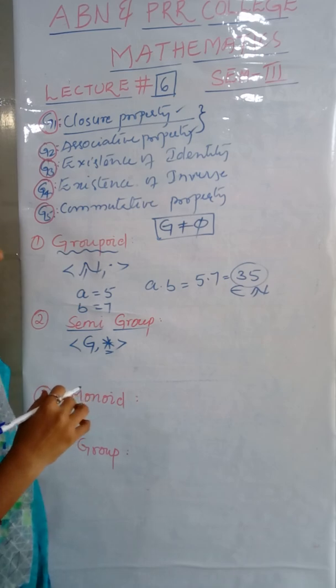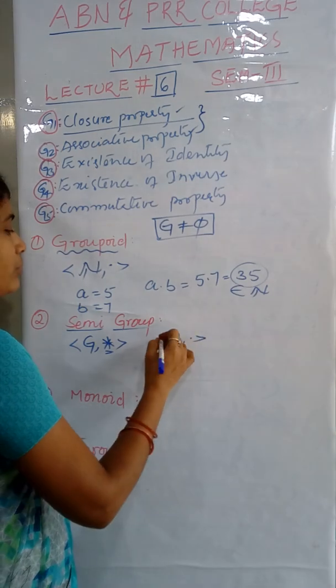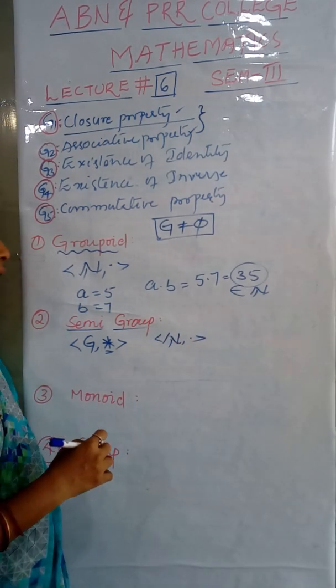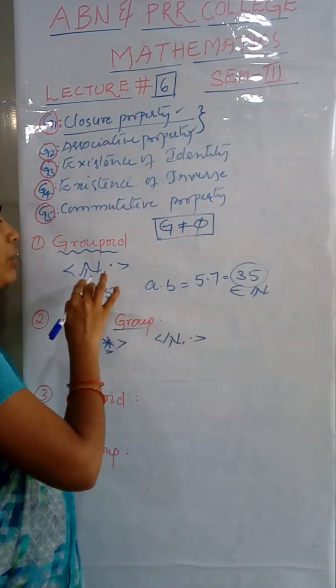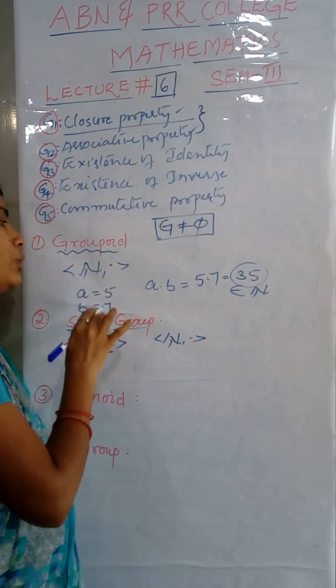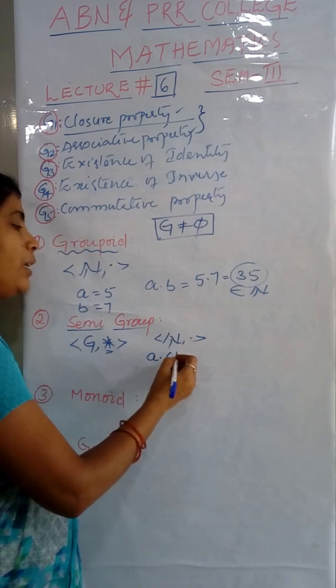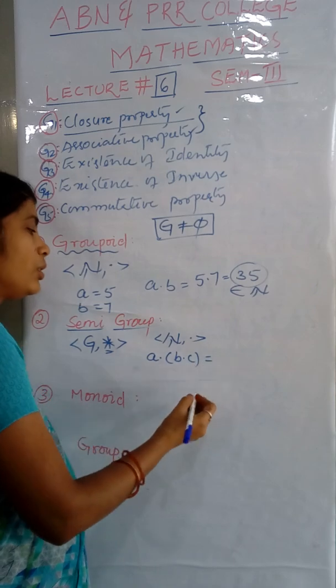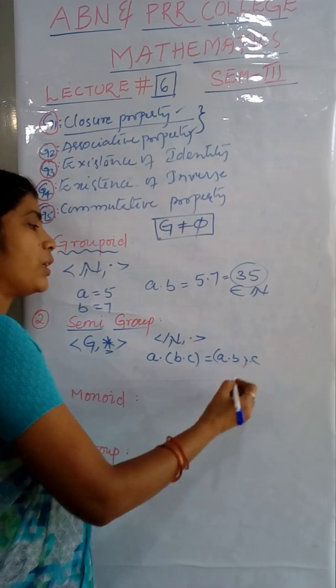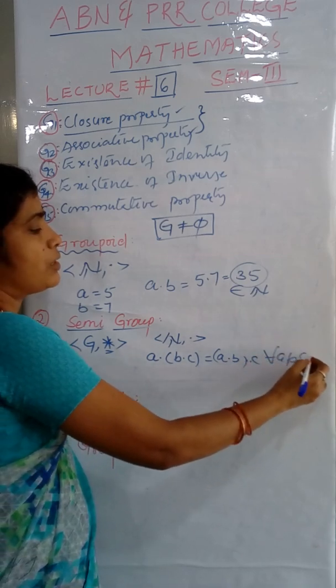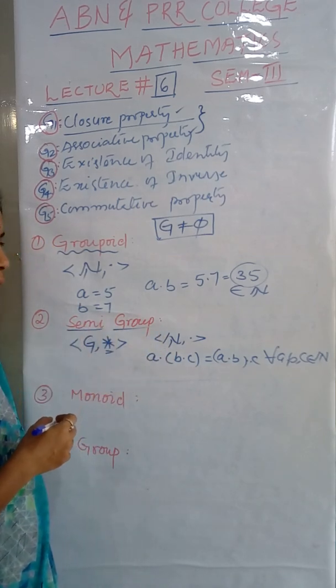Give a special example of this semigroup: N, dot again. N, dot is a semigroup because here already we discussed in N, dot, closure property holds. Similarly, we can verify in N, dot, A dot B dot C value equals A dot B dot C for every three elements in the set. So we can say that N, dot is a semigroup.